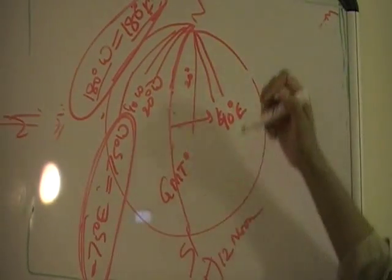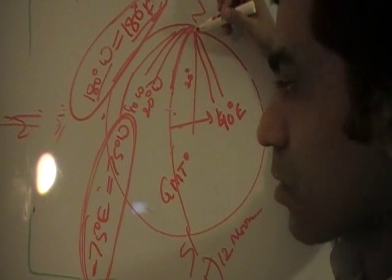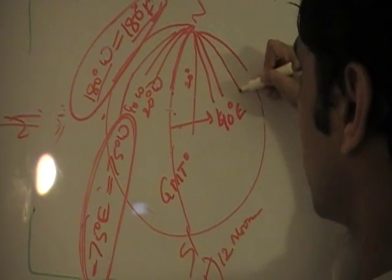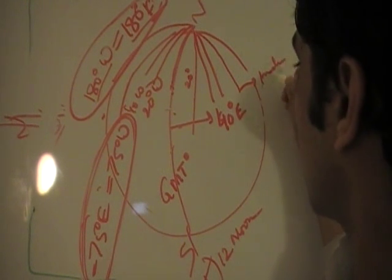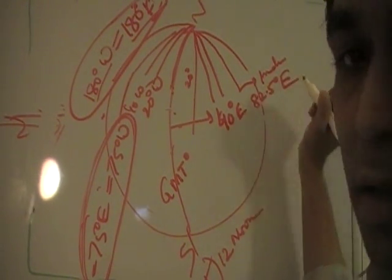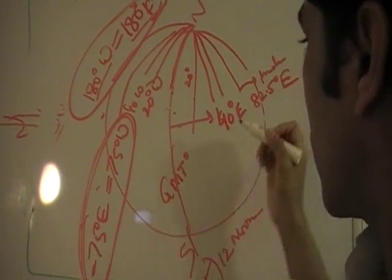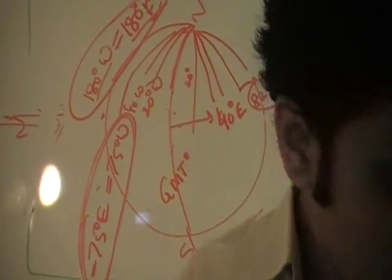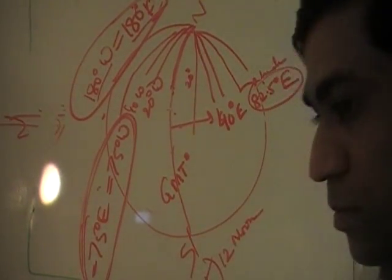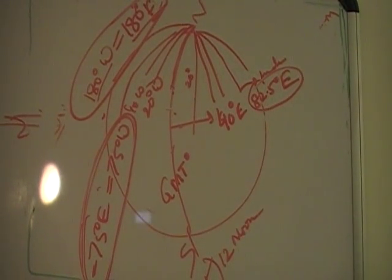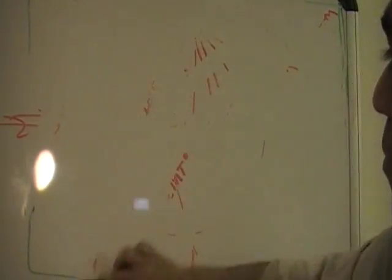So before I rub this out: this is 40 degrees east for Saudi Arabia. This is India, that is 82.5 degrees east, which is the Allahabad timing — 82.5 degrees east. Got it. Now let me rub this out.